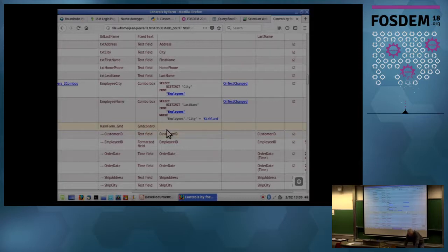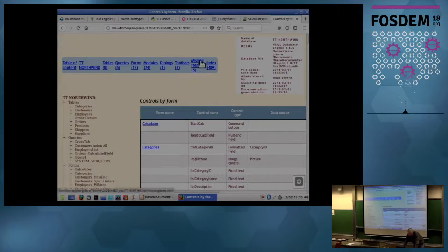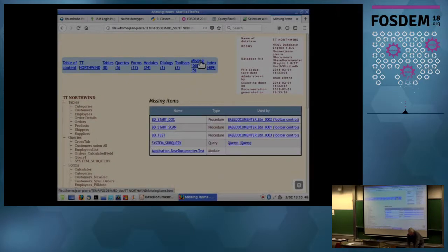I just want to show also that you can identify by this tool a number of items that are missing, because they are used somewhere, but they are not found by the tool. And you have also a full index of all items found. So there are here almost 500 names identified in the application.